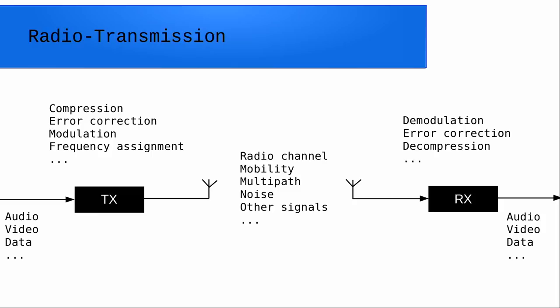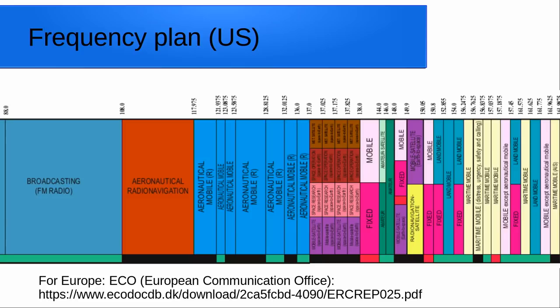A bit about frequency assignment — there are frequency plans. Here you can see a frequency plan of the US, a nice chart. For example, you can see the frequency band from 88 to 108 MHz, then some aeronautical services and other stuff at other frequencies. For Europe they have a really huge table you can find on the website of the ECCO, the European Commission Communications Office. If you want to know what's probably on a given frequency, you can look there.